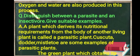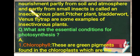The next question: distinguish between a parasite and an insectivore with suitable examples. A plant which derives its nutritional requirements from the body of another living plant is called a parasitic plant. Cuscuta, dodder, and mistletoe are some examples. The green plant which obtains its nourishment partly from soil and atmosphere and partly from small insects is called an insectivorous plant. Pitcher plant, bladderwort, and Venus flytrap are some examples of insectivorous plants.